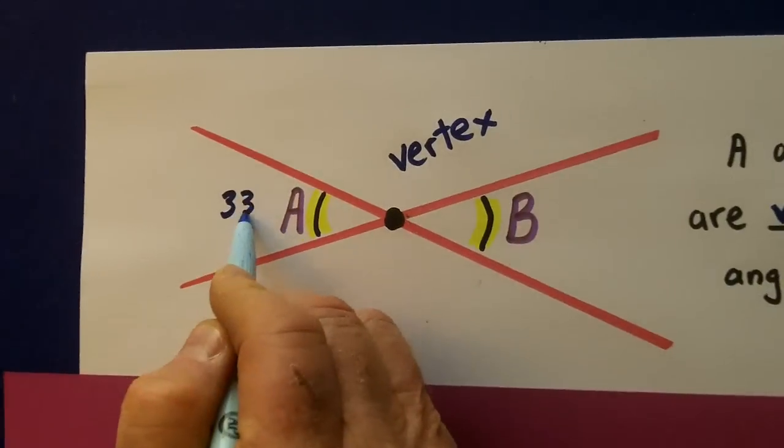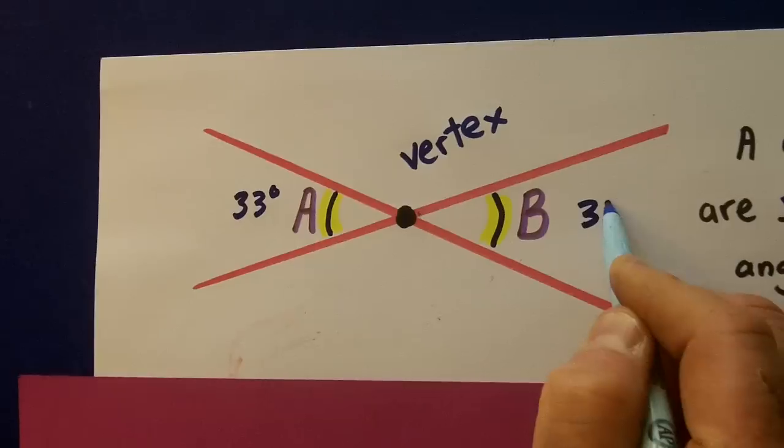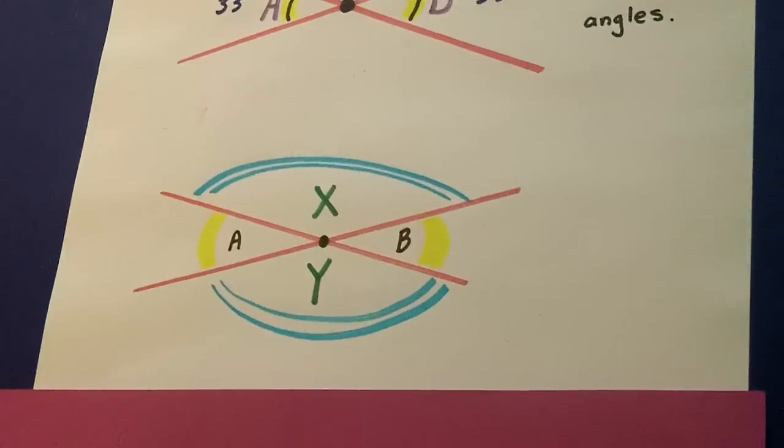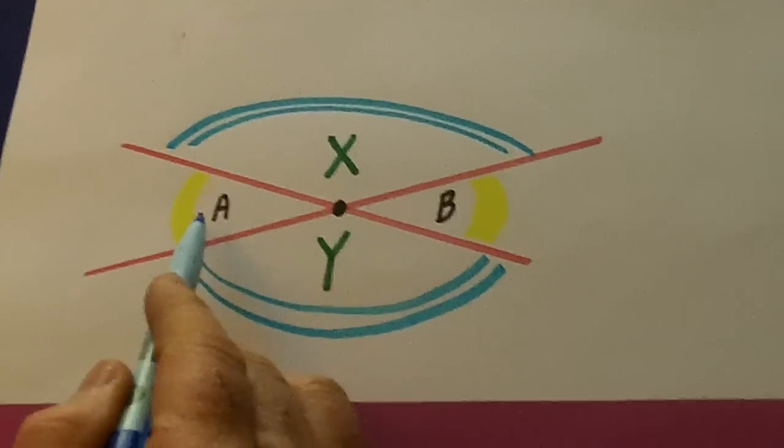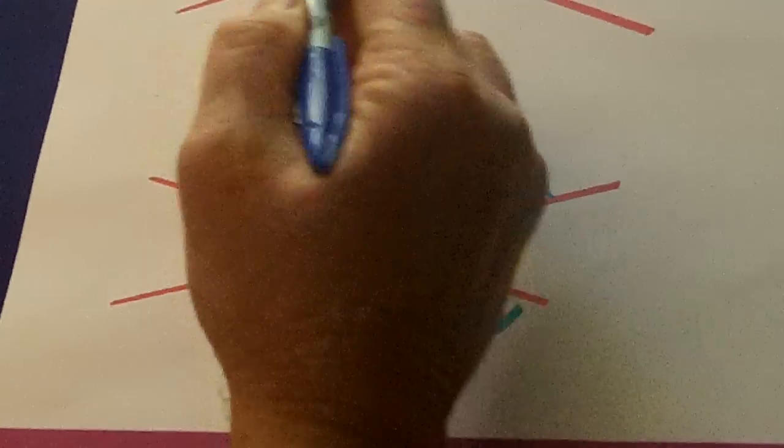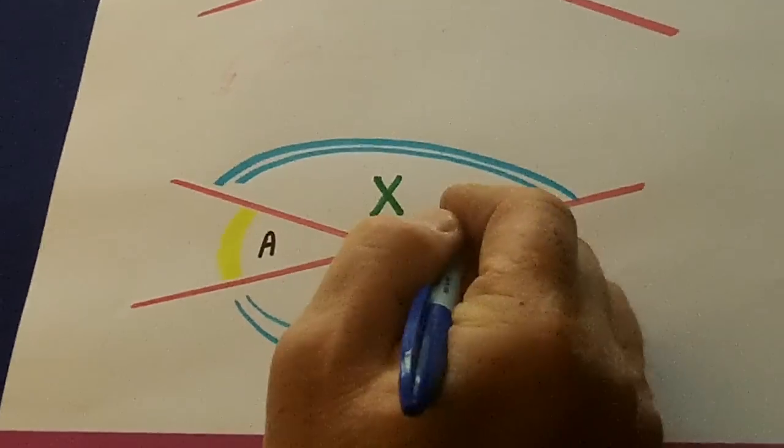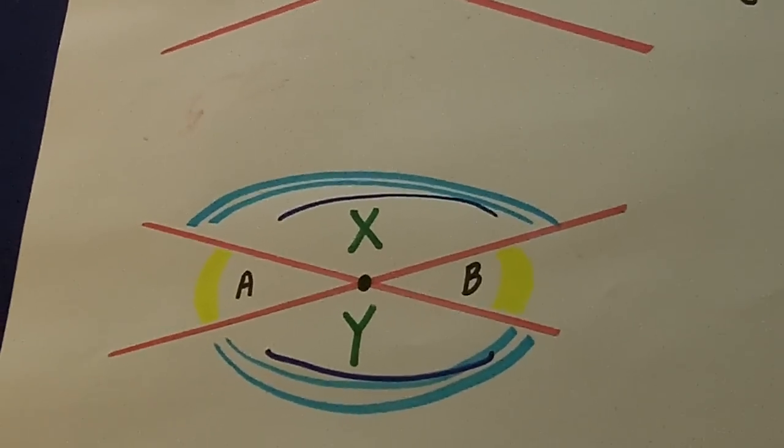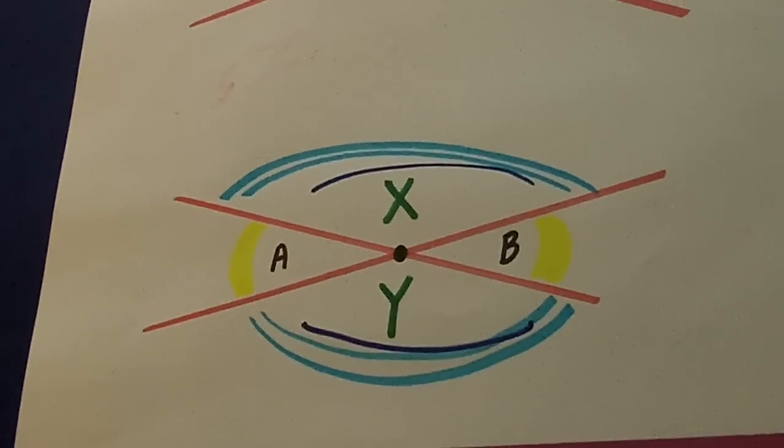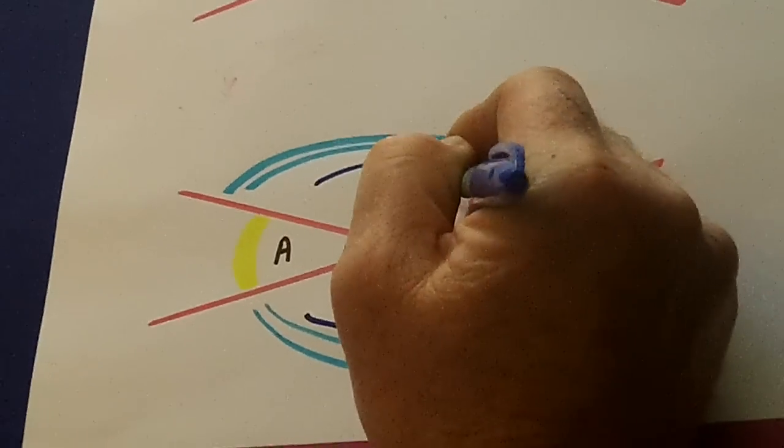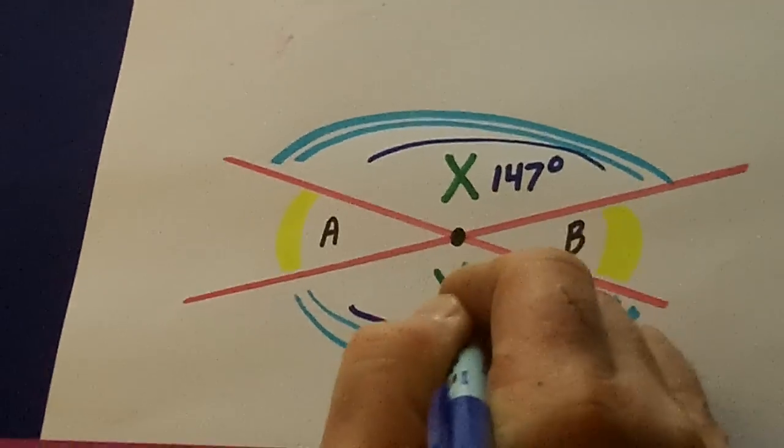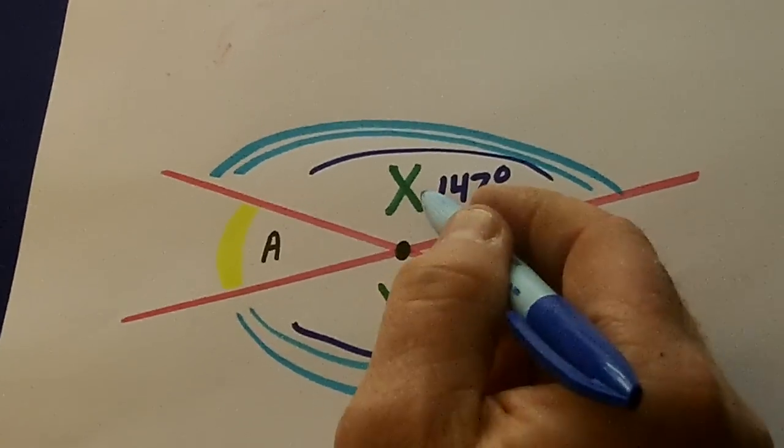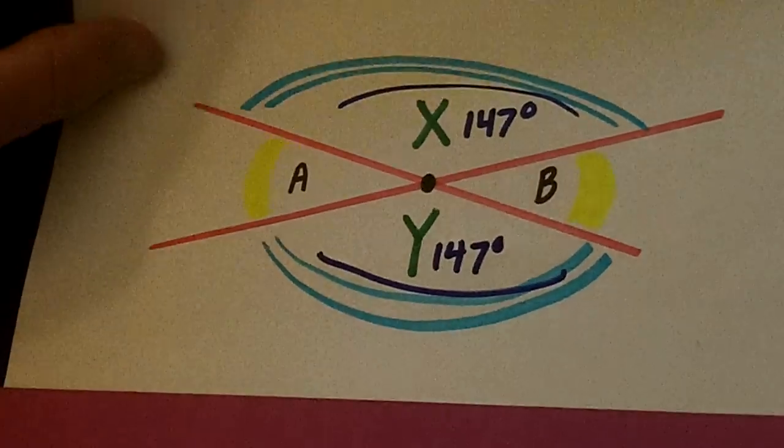So if A is 33 degrees, B is also 33 degrees. Now let's look here. A and B are just like above. But also, these big angles here in blue, they're also vertical angles and they're also equal. So let's say X is 147 degrees. Well, Y is 147 degrees. Vertical angles on each side of the vertex are equal.